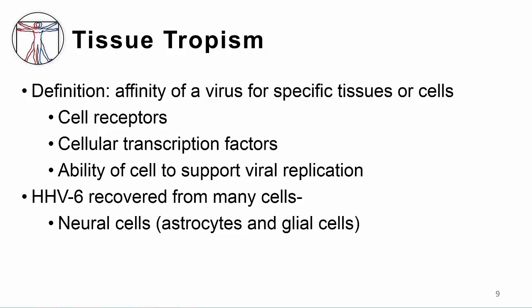HHV6 replicates in a wide variety of cells including T cells, monocytes and macrophages, natural killer cells, astrocytes, and glial cells, which are a type of nerve tissue. It can also be recovered from a broad range of tissues such as lymph nodes, renal tubular cells, salivary glands, and the central nervous system. The fact that it has tissue tropism for neural cells can explain why patients develop seizures during primary illness and why encephalitis is one of the main manifestations of HHV6 reactivation in immunocompromised hosts.